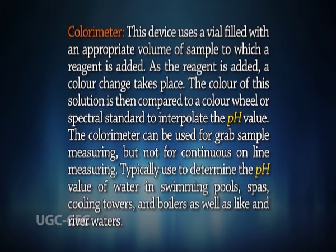The colorimeter can be used for grab sample measuring but not for continuous online measuring. It is typically used to determine the pH value of water in swimming pools, cooling towers, boilers, and river waters.